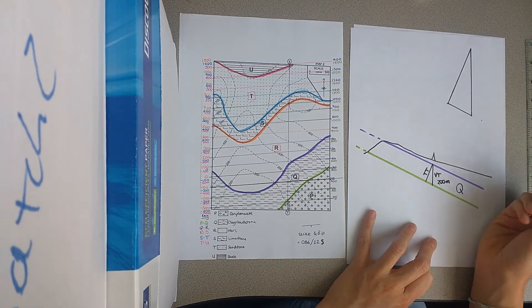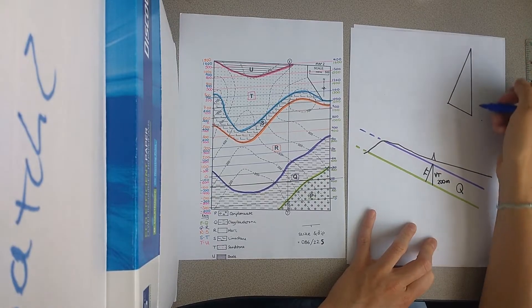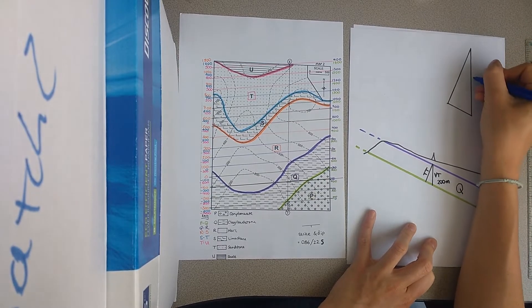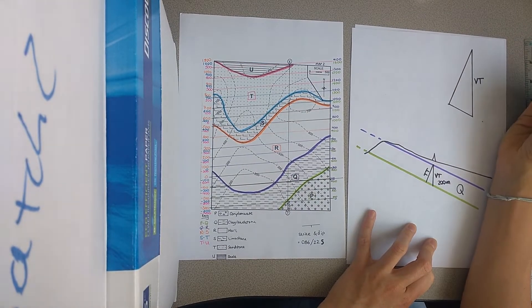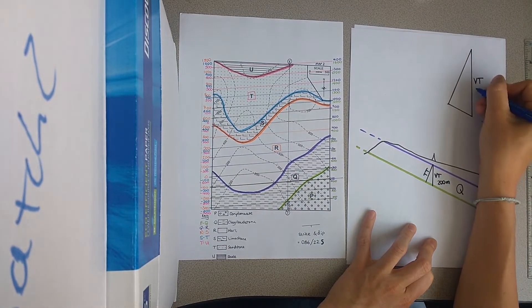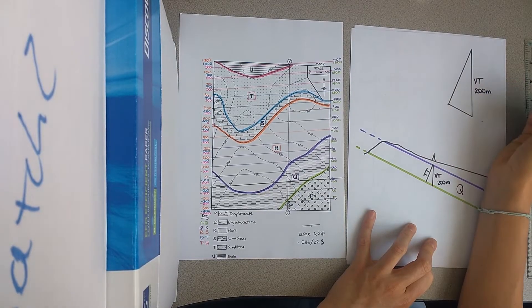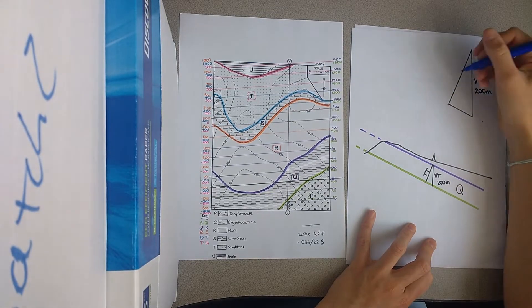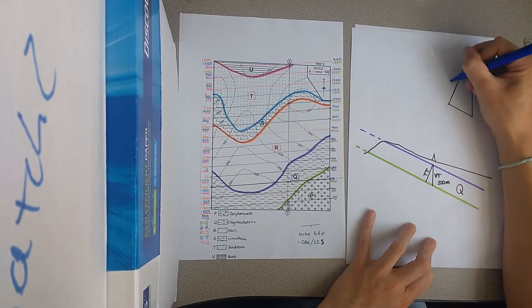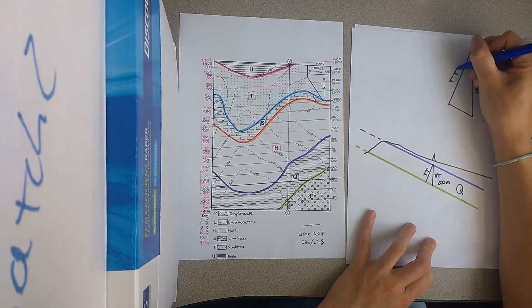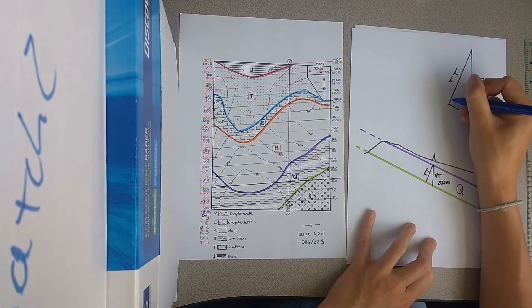So that 200 metres means that the vertical thickness between the purple and the green line is 200 metres. So this vertical thickness for this unit is 200 metres. But we want to know the true thickness here.